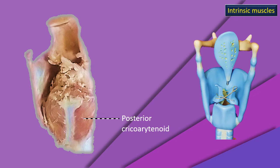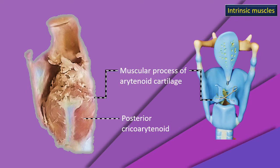This is a combination of a larynx model and an actual dissection. See the clarity with which the posterior cricoarytenoid stands out on the posterior aspect of the cricoid lamina. Note the direction of its fibers — upper fibers are almost horizontal, lower fibers are almost vertical, all converging toward one corner. That corner is an important landmark: the muscular process of the arytenoid cartilage, which is a very, very important landmark in this discussion.